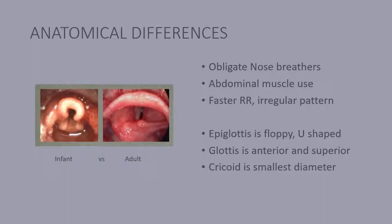Until about age two, they have a large, floppier epiglottis and a malleable, soft trachea. The epiglottis is U-shaped, as you can see here in this picture — this is the infant — and the trachea itself is right in here, so you can see how small that opening is.